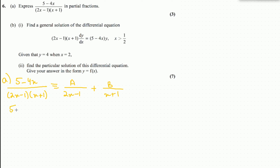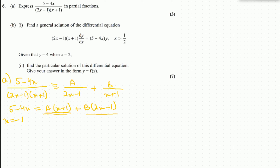We get 5 minus 4x on this side and a times x plus 1 plus b times 2x minus 1 on this side. We need to make each of these terms zero one by one. We say that when x equals negative 1, this term will be zero.